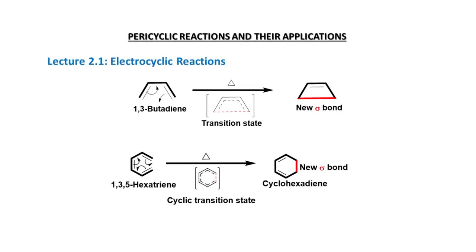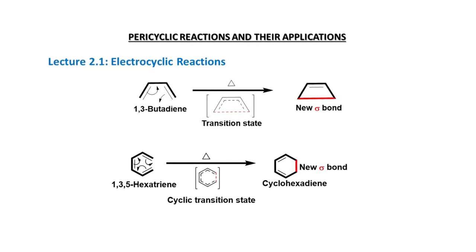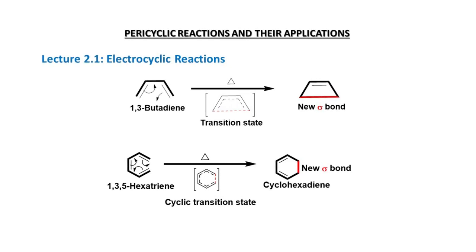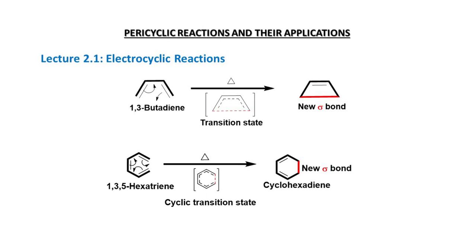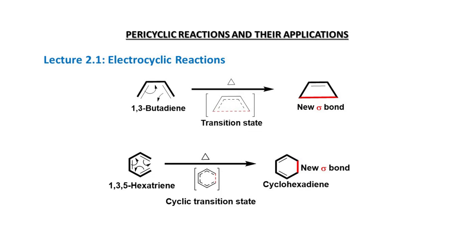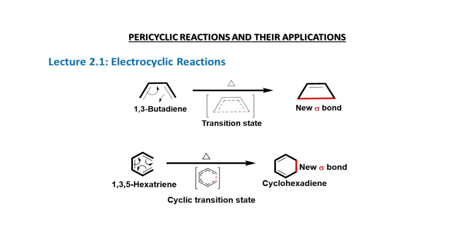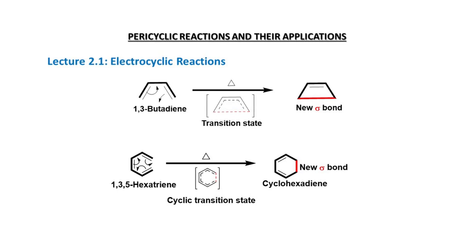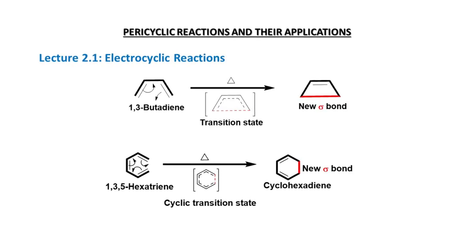In this slide you can also see the conversion of 1,3-butadiene into the cyclobutene molecule, where the formation of a new sigma bond takes place between C1 and C4 terminal carbon atoms via the cyclic reorganization of the pi electrons. The conversion of pi electrons into a sigma bond is shown with a different color, and the newly formed sigma bond is highlighted in red. Coming to another example, 1,3,5-hexatriene — the cyclic reorganization of pi electrons is shown with arrow marks, and the newly formed sigma bond between C1 and C6 is marked in red.